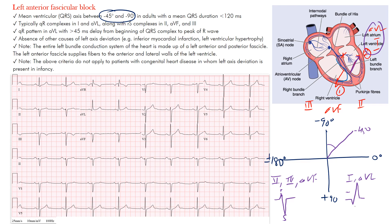This is where you see rS complexes in the inferior leads and qR complexes in leads I and aVL. Looking at the EKG here, in lead I and aVL you can see the q wave followed by the big R wave, and in lead I there's a qR followed by a small s. The main finding we're looking for is the axis deviation, and in the inferior leads — II, III, AVF — we're looking for those rS complexes.